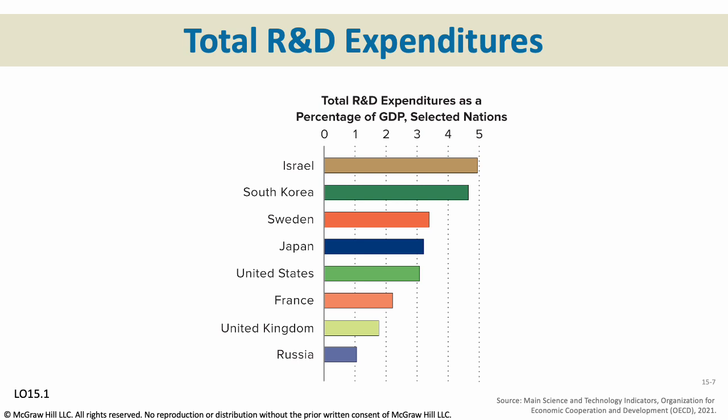Research and development is very important because it allows technological change, new products, better products, and more efficient ways of doing things. Without R&D, which is considered a capital good, we would never actually grow or change or get new products.